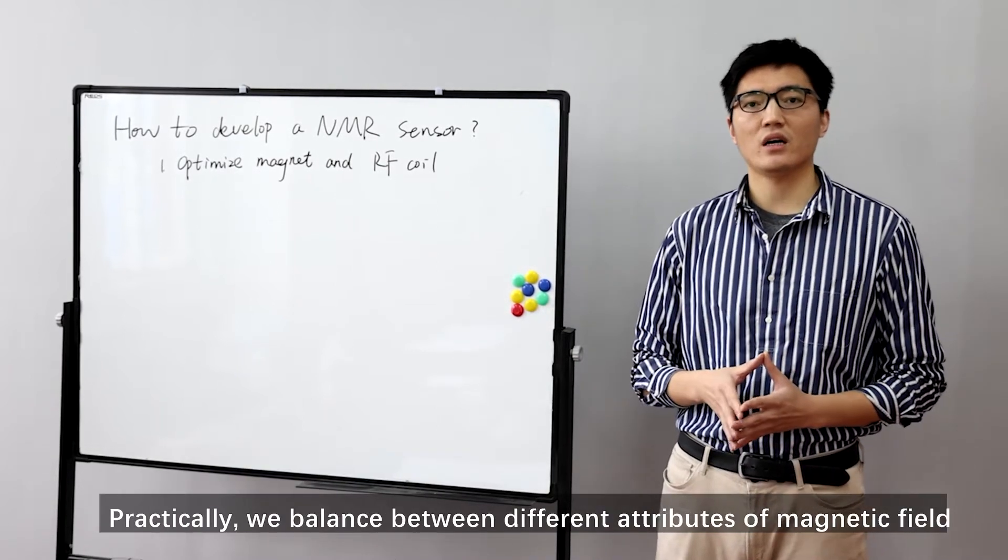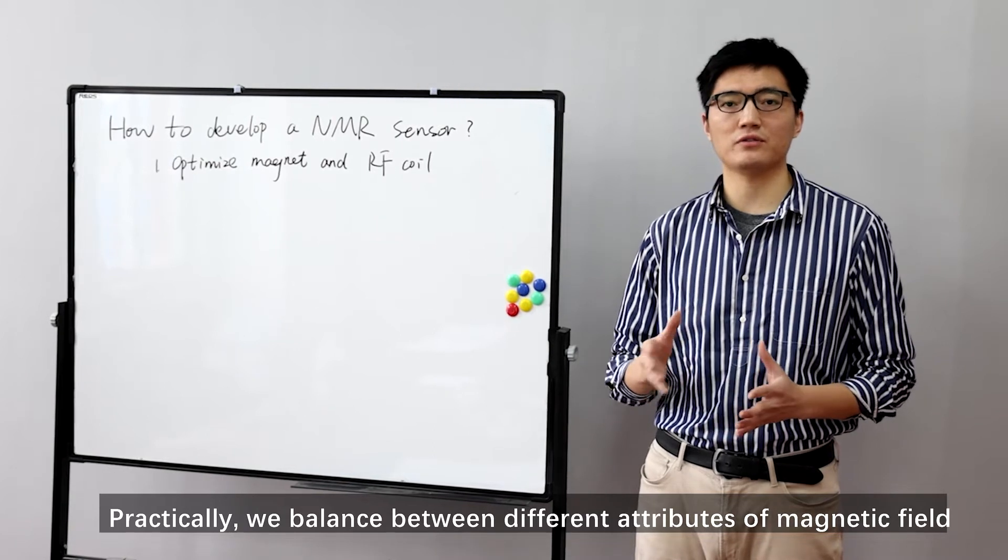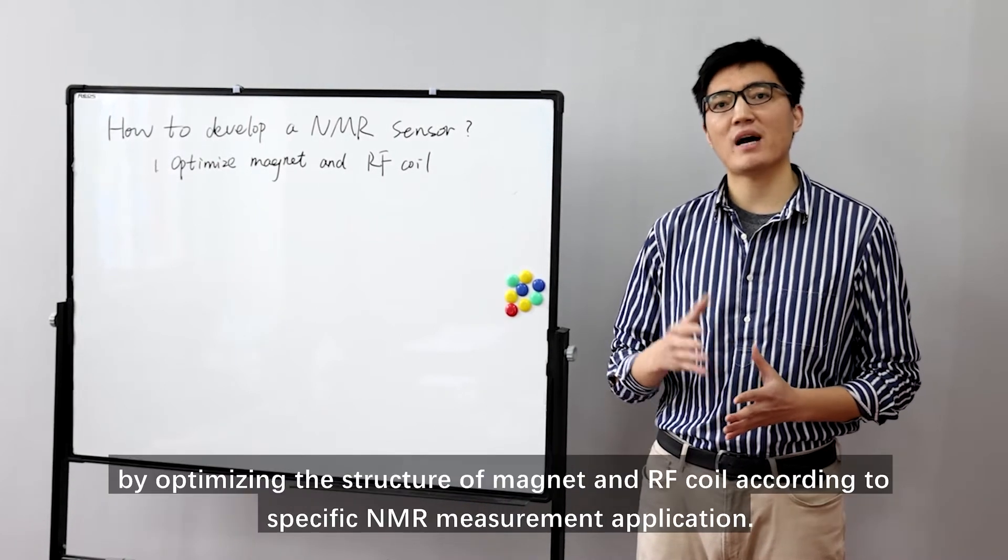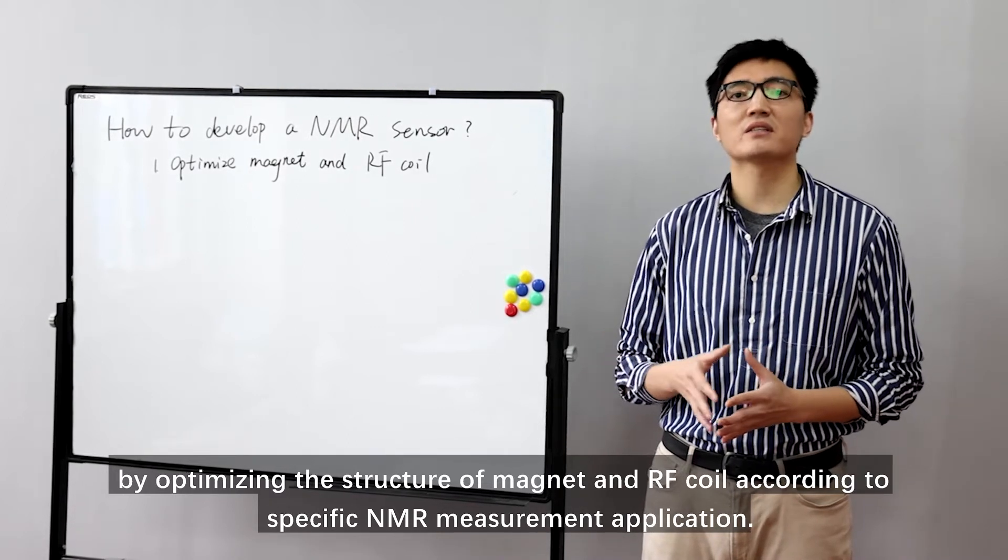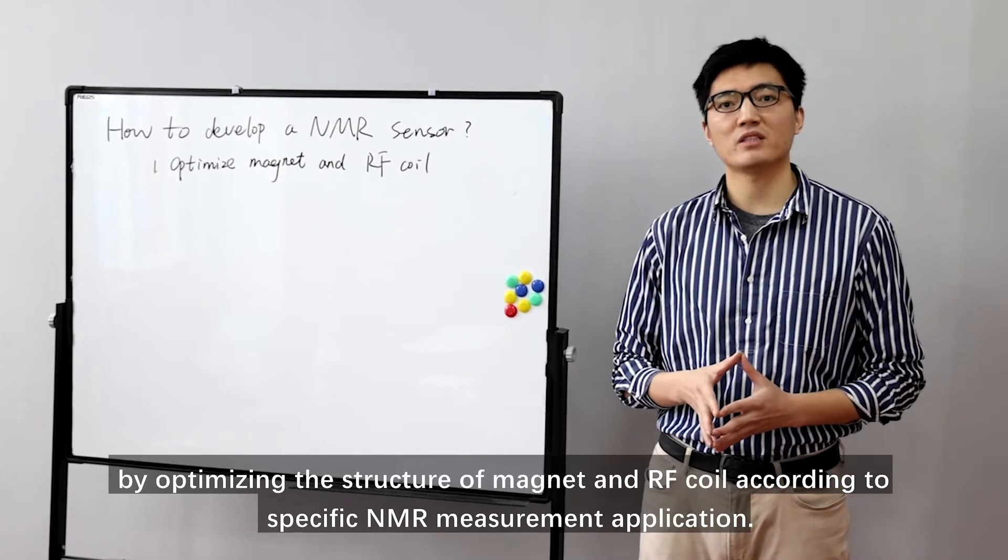Practically, we balance between different attributes of magnetic field by optimizing the structure of magnet and RF coil according to specific NMR measurement application.